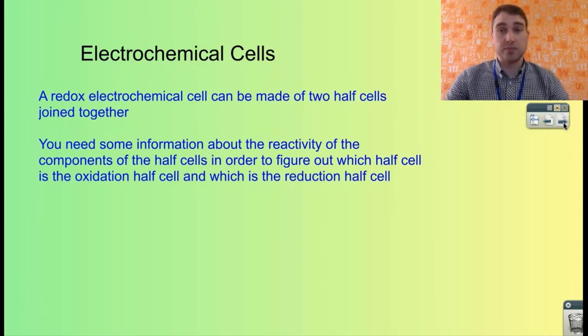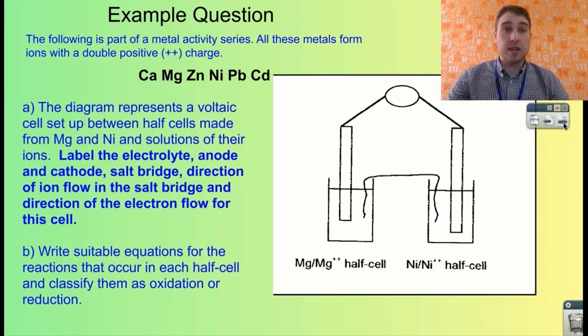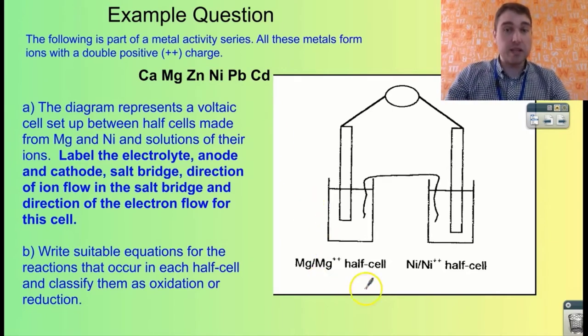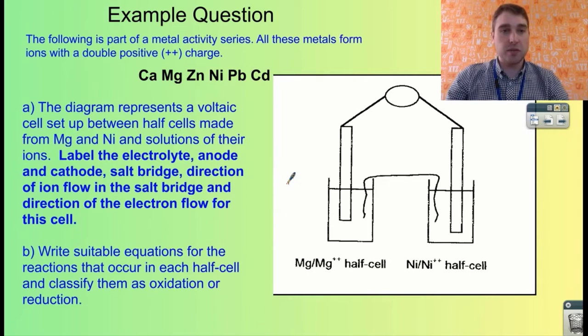So let's do some example questions. In this question we have a metal activity series here, so we've got calcium being the most reactive, cadmium being the least reactive. The diagram represents a cell setup, we've got magnesium and nickel. You need to label the electrolyte, anode, cathode, salt bridge, direction of ion flow in the salt bridge and direction of electron flow in the cell.